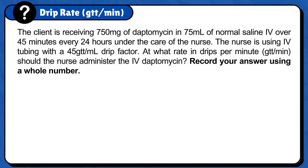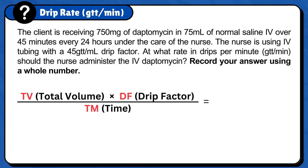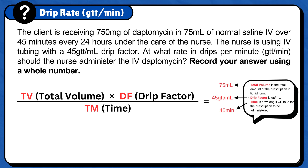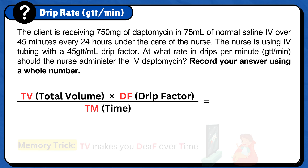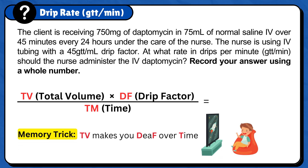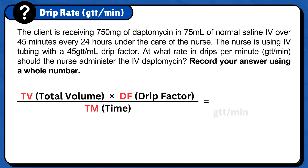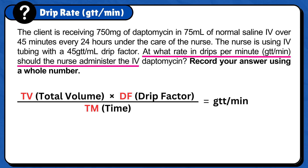First, set up the formula: total volume times drip factor over time. Total volume is the total amount of the prescription in liquid form. Drip factor is gtt per milliliter. And time is how long it will take for the prescription to be administered. The memory trick to remember this formula is TV makes you deaf over time. The next step is to add the unit answer, gtt per minute, because the question is asking at what rate in drips per minute should the nurse administer the IV daptomycin.